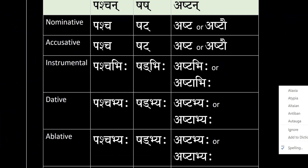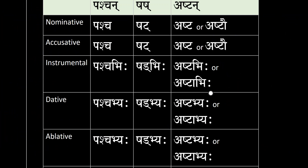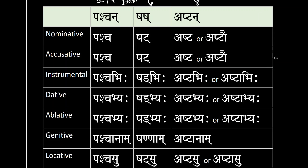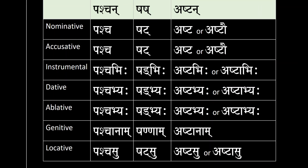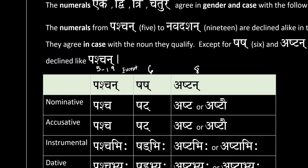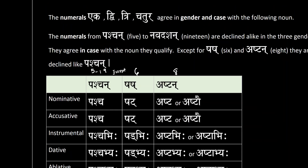So everything — all of the numbers from five to nineteen — you will decline like number five. But number six and number eight have their own declension, and they are right there for you. With that, these are your numbers, and this is your Sanskrit instructor signing off with a Namaste.